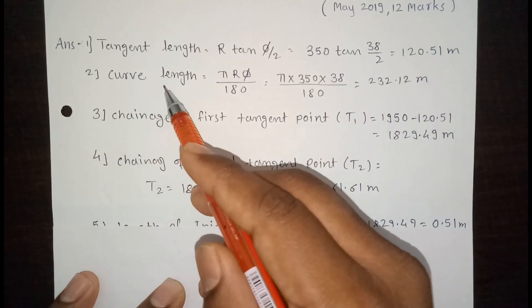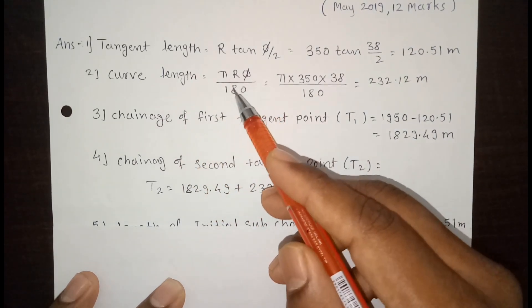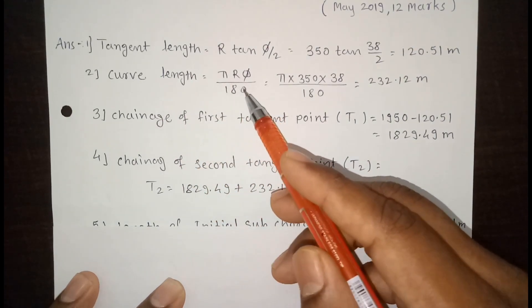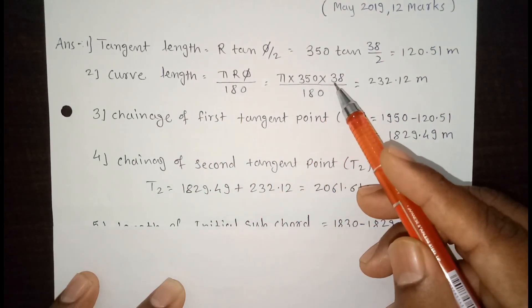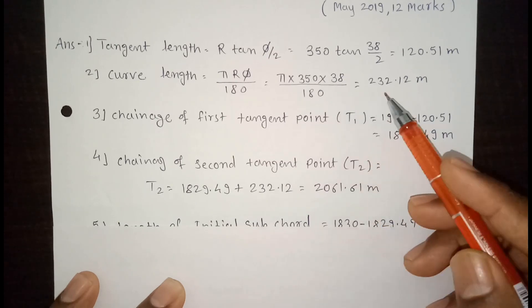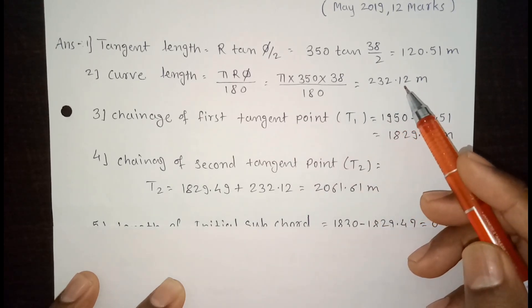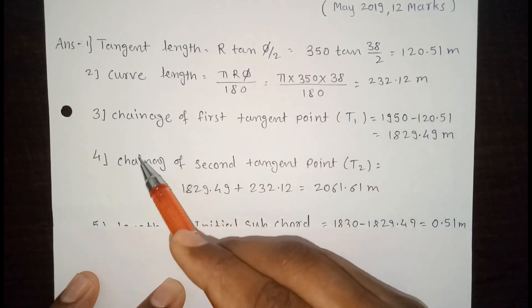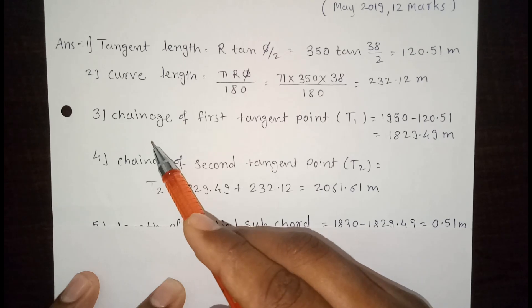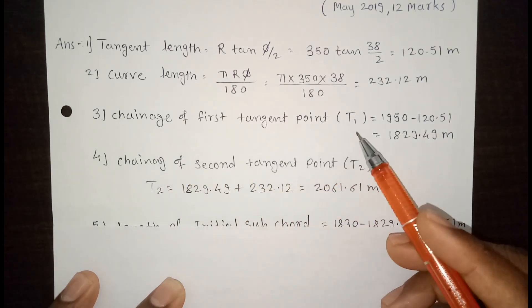The second step is curve length. The formula is πRφ/180. R is 350 and φ is 38. So curve length is 232.12 meters.